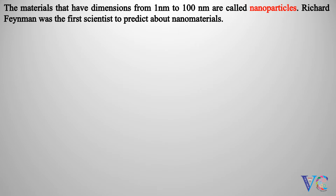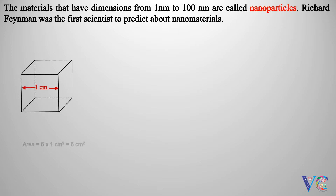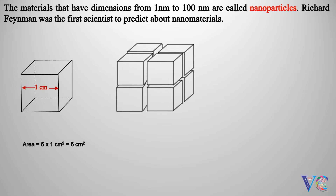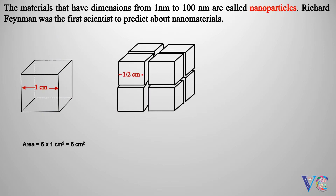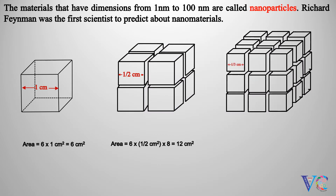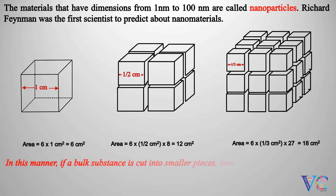Let us observe a cube having surface area of 6 centimeters square. If we cut this cube horizontally and laterally, 8 small cubes are formed, with a surface area of 12 centimeters square. On further cutting, 27 cubes are formed and the surface area of all these cubes put together will be 18 centimeters square. In this manner, if a bulk substance is cut into smaller pieces, the surface area increases.